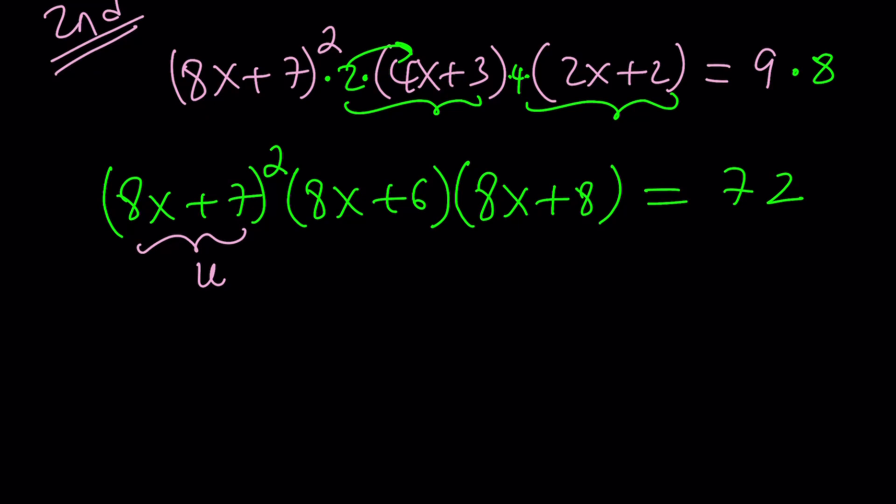So if this is u. So u is 8x plus 7. 8x plus 6 is just going to be one less than this. In other words, if you subtract 1 from both sides, you get 8x plus 6. So this will be u minus 1. And obviously, this is one more than u, which is u plus 1. Get the idea? So everything is very specially arranged.